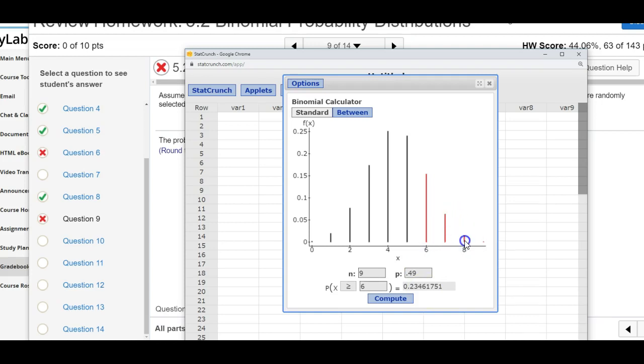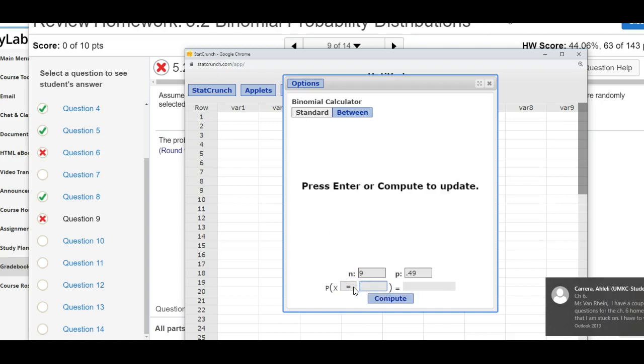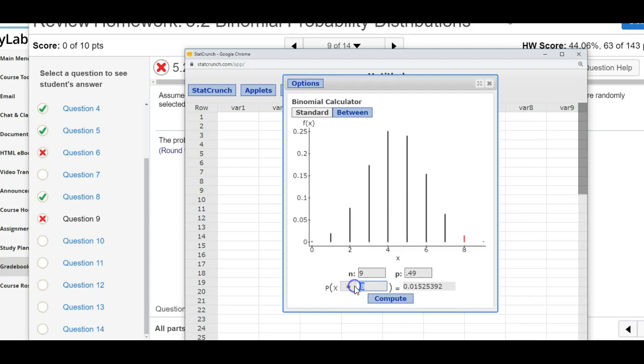You probably were calculating the probability X equals six. You would have had to do the probability X equals six plus the probability X equals seven plus the probability X equals eight plus the probability X equals nine.